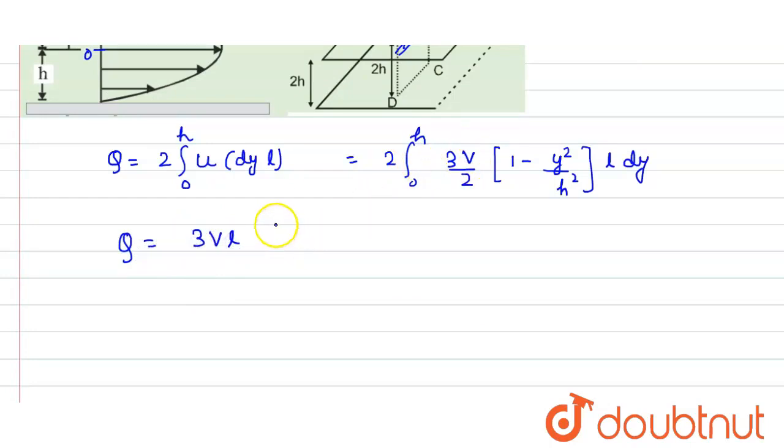Now from 0 to h, then we can just directly integrate because it is a simple integration. So integration of 1 with respect to dy would be y, minus integration of y² is y³ divided by 3, and then we have h². We can just put the limit from 0 to h.